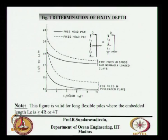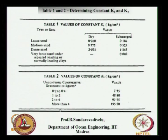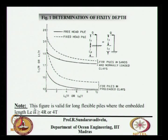We will see an example problem for calculating fixed rate depth. To calculate the fixed rate depth, you need L1, the unsupported length, and the embedment length. The x-axis is L1/R and the y-axis is LF/R. This chart is applicable only if the embedment length is greater than 4R or 4T.